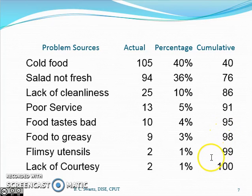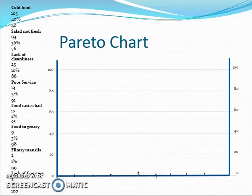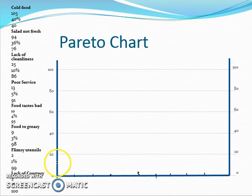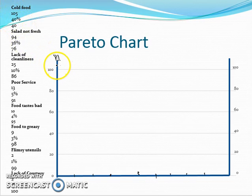Pareto is really, really nice — it communicates a lot of data very quickly. By just looking at the picture, someone can understand the situation. So this is something I prepared; this is what our Pareto chart is going to look like. On the x-axis I'll have my eight bars — all eight problem sources. On the left side y-axis I'll have the actual number of problems. The highest problem is cold food, which will be at exactly 105, just over 100. The next one is salad not being fresh, which would be my second bar at 94.